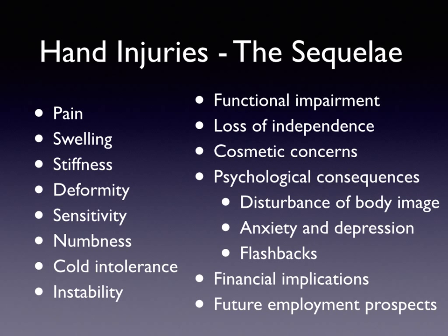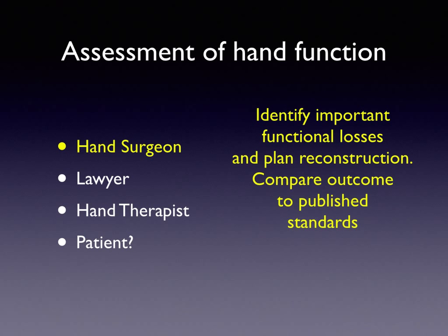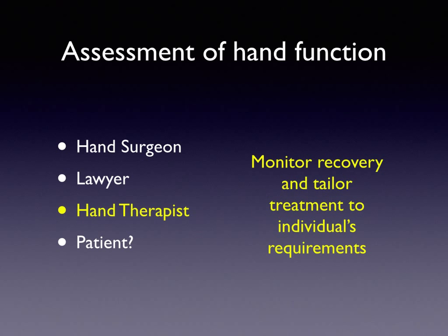The consequences of injury are functional impairment with loss of independence. There are psychological worries, cosmetic worries, issues about disturbance of body image, psychological sequelae with anxiety and depression, flashbacks to an injury, and of course a loss of independence, financial implications and worries about future employment prospects. When we assess hand function, we have a heterogeneous group of people with different functional demands. Whose perspective do we assess it from? As a hand surgeon, I want to identify important functional losses and plan reconstruction accordingly. A lawyer wants to quantify loss for financial settlement. A hand therapist will want to monitor recovery and tailor treatment to an individual's requirements.